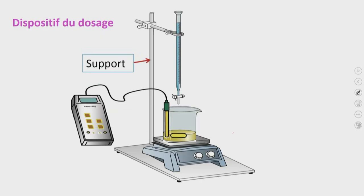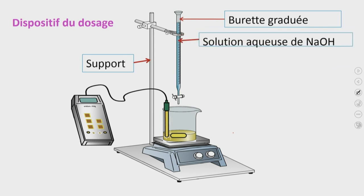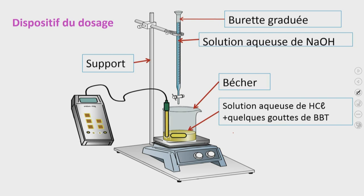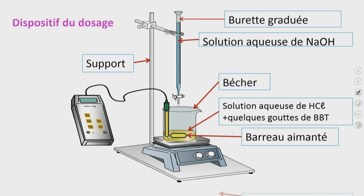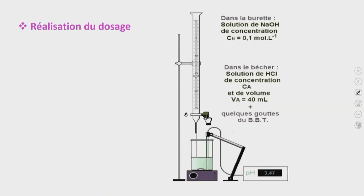On assemble maintenant tout ce matériel pour obtenir le dispositif de dosage suivant. Ce dispositif est formé d'un support pour la fixation du matériel, une burette graduée dans laquelle on a la solution aqueuse de NaOH, un bécher dans lequel on a la solution d'acide avec quelques gouttes de bleu de bromothymol, un barreau aimanté pour homogéniser le mélange. Le bécher est placé sur un agitateur magnétique et on dispose aussi d'un pH-mètre.